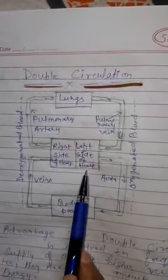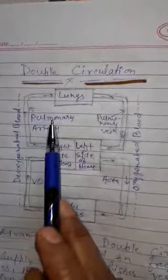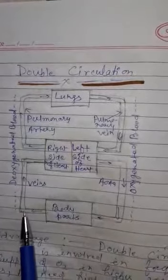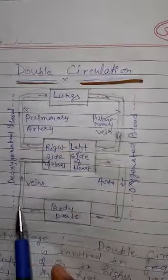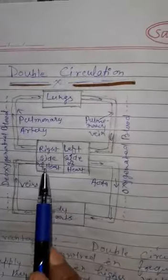Here is the diagrammatic representation of double circulation. It is the right side of the heart. It is the left side of the heart. Two major blood vessels are connected with right side of the heart.